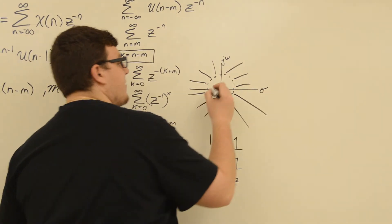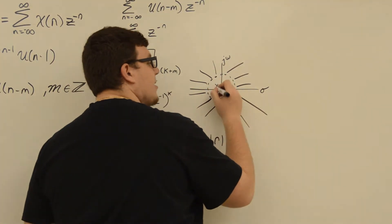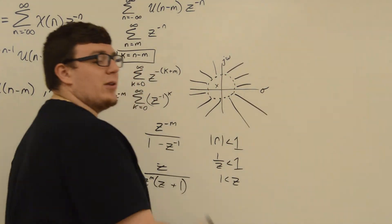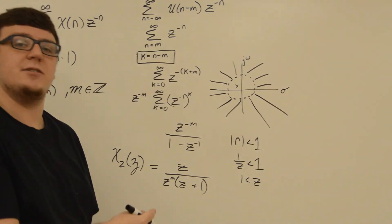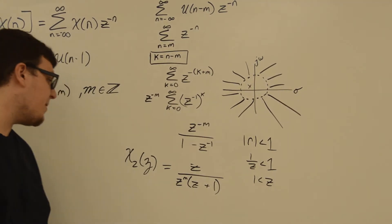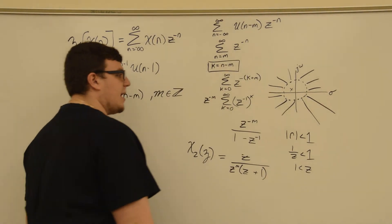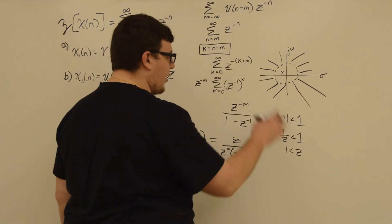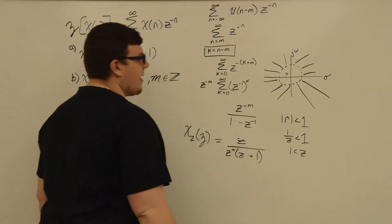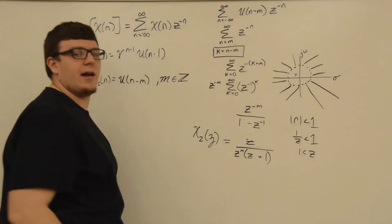If you pick a Z value inside the unit circle, it will not yield the same Z-transform. Hope you guys learned a little bit about that, and have a good day.